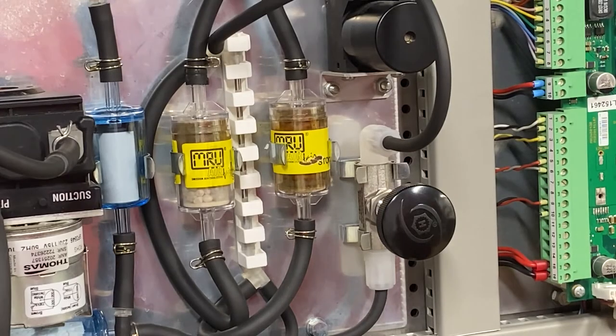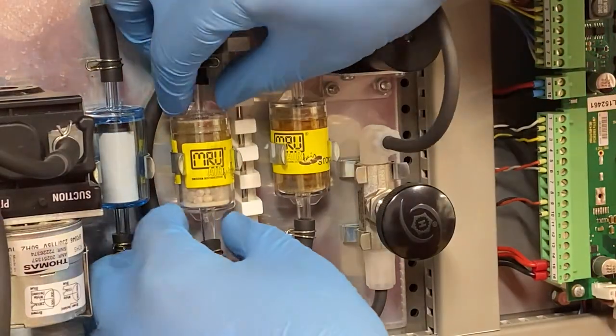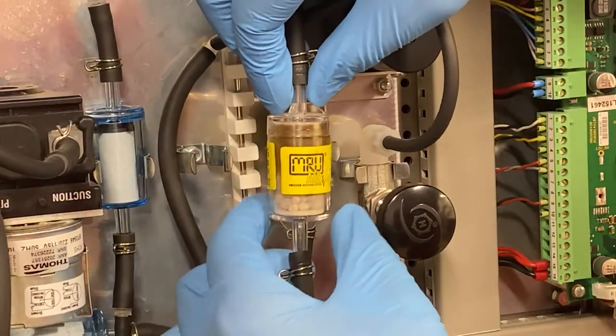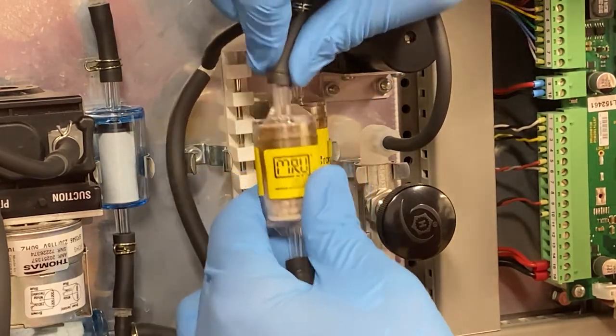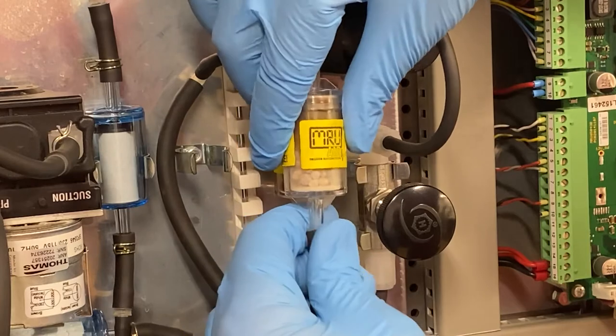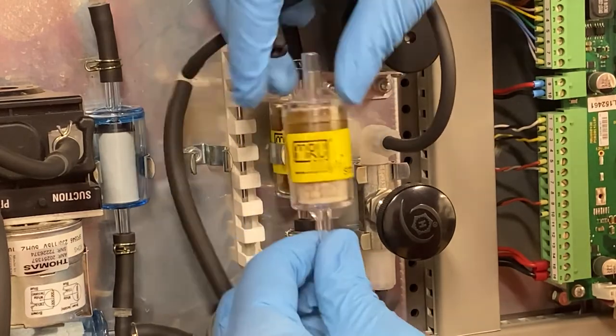To remove the used filter, first unclip it from inside the device. Then unfasten the metal clasps on both the top and bottom. And lastly, remove the tubing from both sides.